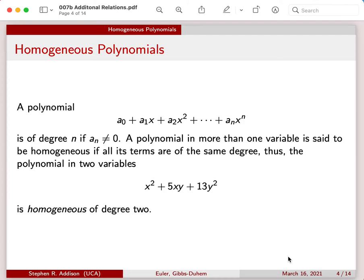Starting with polynomials, I've got a standard expression for a polynomial on the slide. And if the coefficient of the nth term isn't equal to zero, and it's the highest term, then that power is the degree of the polynomial. And a polynomial is homogeneous if all the terms are of the same degree. If you look at the polynomial I have listed there, that's homogeneous of degree two.